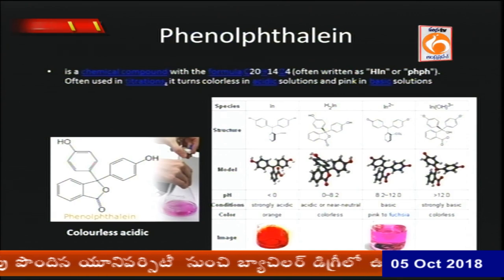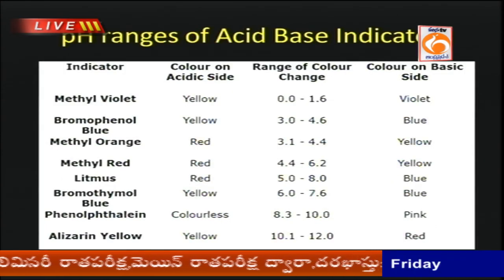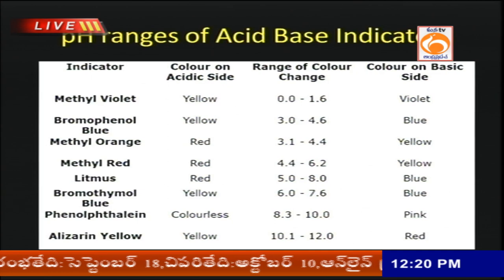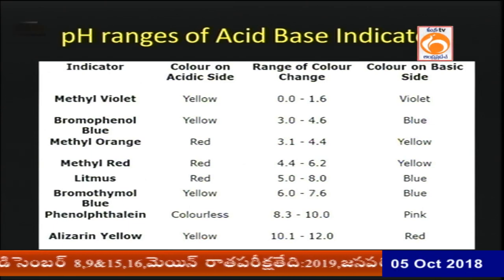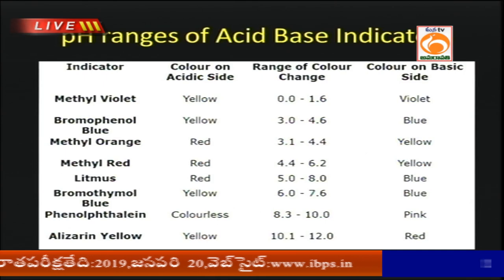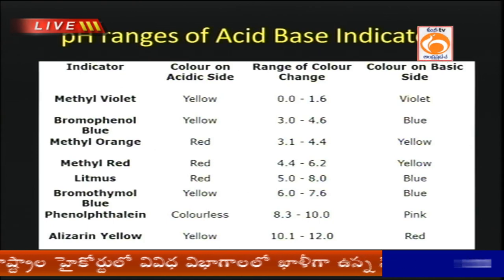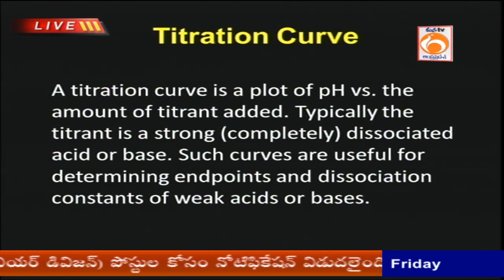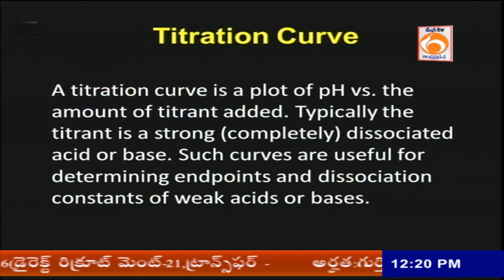Phenolphthalein is a weak organic acid and its structure is shown. Indicators such as methyl violet, bromothymol blue, methyl orange, methyl red, and phenolphthalein all function at an exact pH range. These indicators show one type of color in acid medium and another in basic medium. The functioning of acid-base indicators can be understood using two important theories: the quinonoid theory and the benzenoid theory.